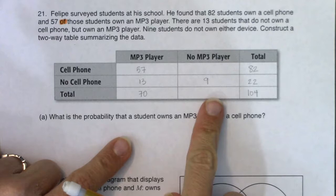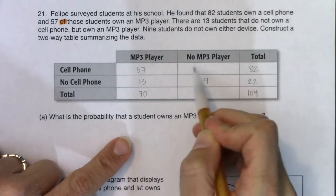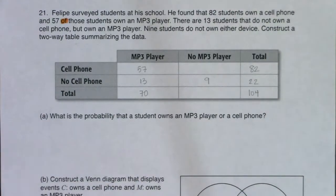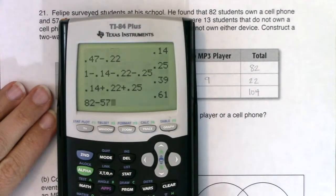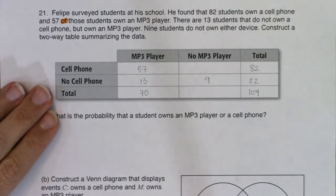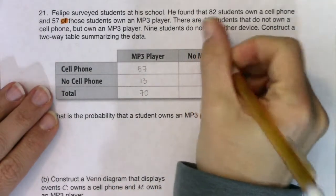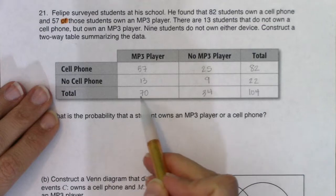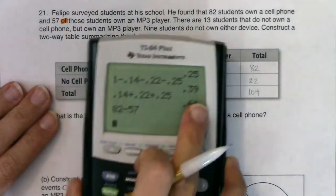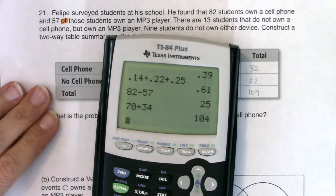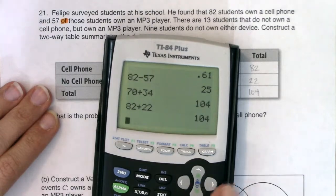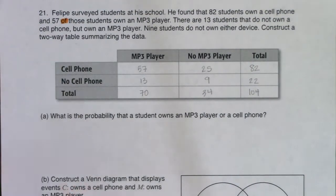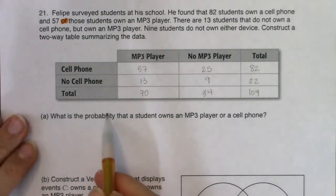I'll use a little subtraction to find the number of students who own a cell phone but don't own an MP3 player: 82 minus 57 is 25. Then 25 plus 9 is 34. As a quick check: do the totals both equal 104? 70 plus 34 is 104, and 82 plus 22 is also 104. I always check that my sample sizes work — there are so many times a small typo can slip in.